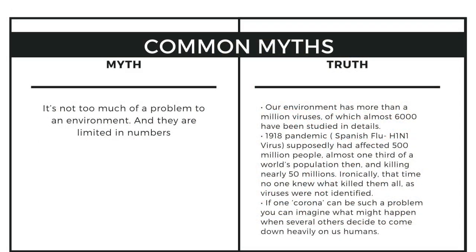Now let us come to the common myths attached to viruses. The first myth is that viruses are not too big a problem to the environment and are limited in numbers. The truth is our environment has more than a million viruses, of which almost 6,000 have been studied in detail. The 1918 pandemic, also called the Spanish flu or H1N1, supposedly affected 500 million people worldwide — almost one third of the population then — killing nearly 50 million people. Ironically, at that time no one knew what killed them, as viruses had not been identified. If one coronavirus can be such a problem as we are witnessing now, you can imagine what might happen when several others decide to come down heavily on us humans.